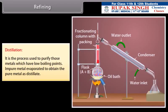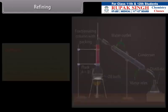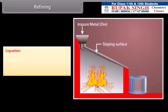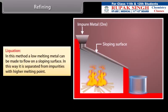Distillation: It is the process used to purify those metals which have low boiling points. Impure metal is evaporated to obtain the pure metal as distillate. For example, zinc and mercury. Liquidation: In this method, a low melting metal can be made to flow on a sloping surface. In this way, it is separated from impurities with higher melting point. For example, tin.